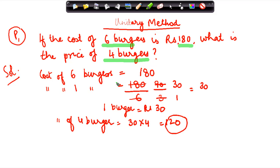And how did I arrive at this answer? I knew the cost of six burgers. I found out the cost of one burger by dividing the cost of six burgers by six. Once I got this, which is 30, then it's easier for me to find out the cost of any number of burgers.